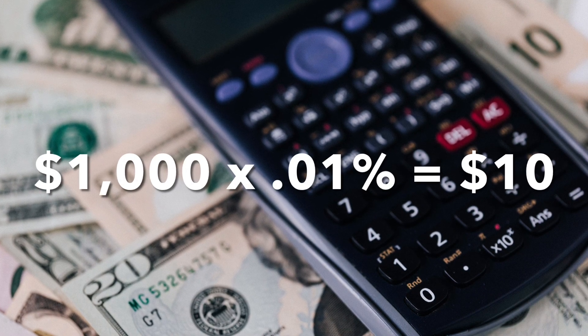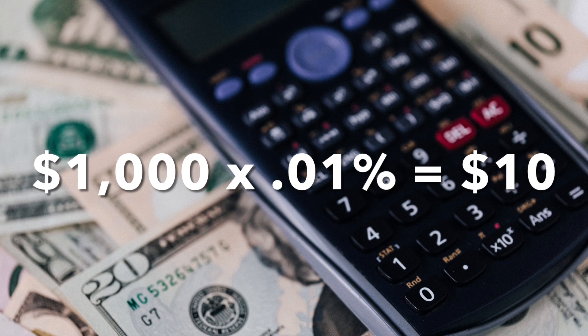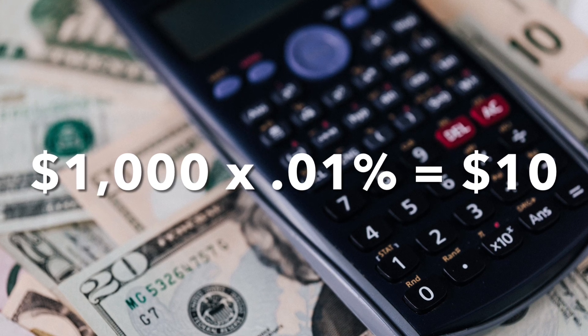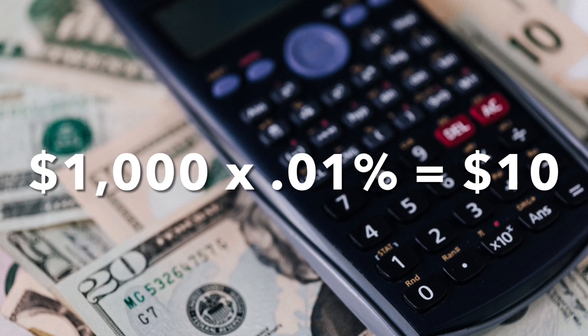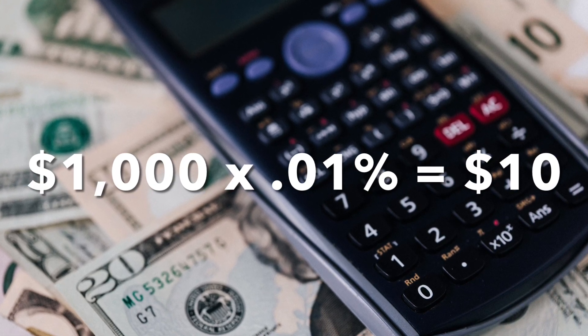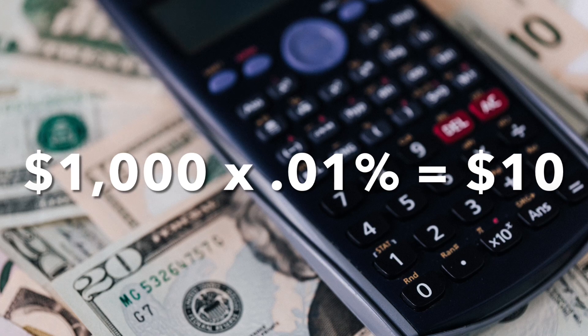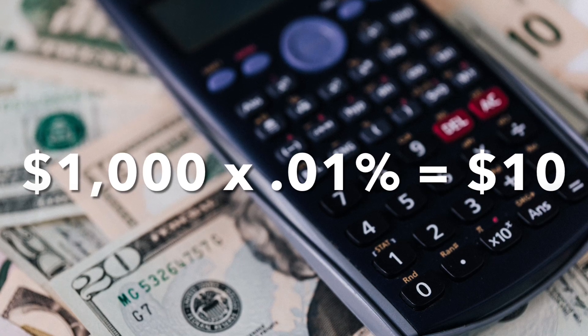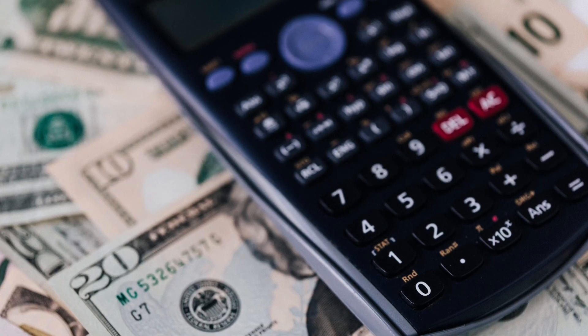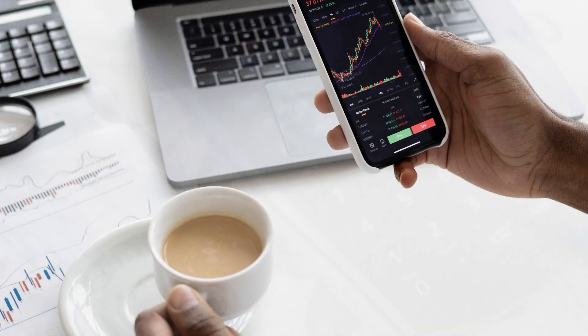For example, if you owned a fund with a 1% expense ratio, this means that for every $1,000 you have invested, you'll pay $10 in expenses per year to own that fund.